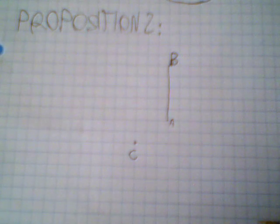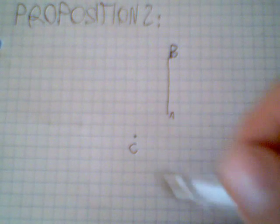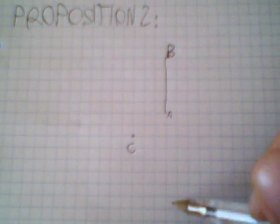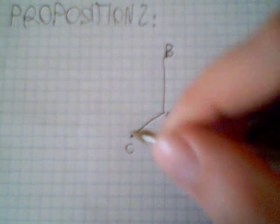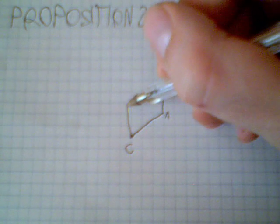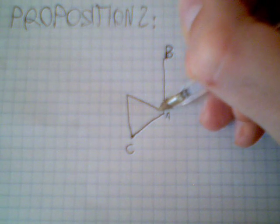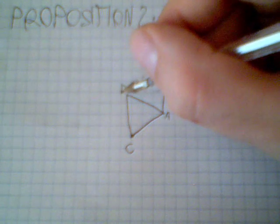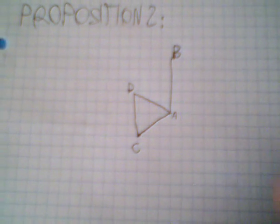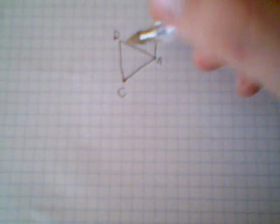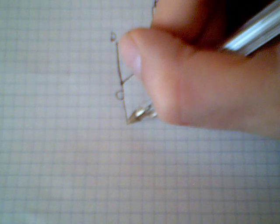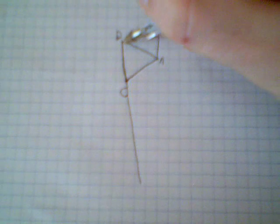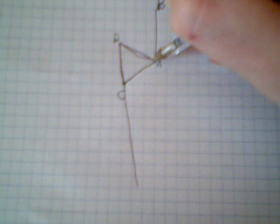And this is how it's done. I join CA. I draw an equilateral triangle CAD, and it's possible for Proposition 1. Then I increase the length of DC and increase the length of DA.